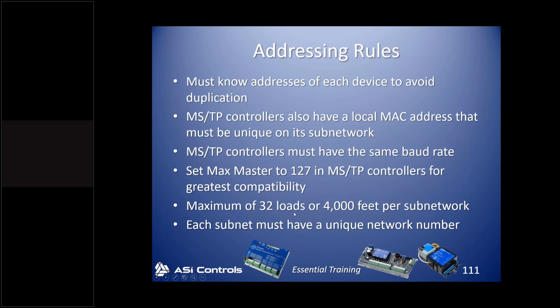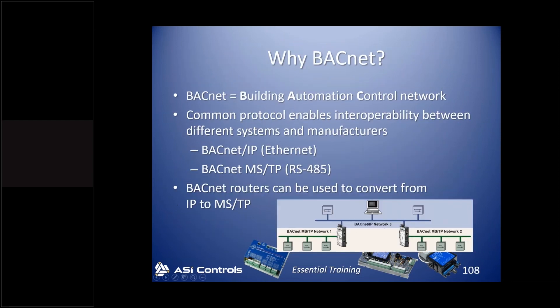Recapping from Tech Note 23: the maximum is 32 loads or 4,000 feet per sub-network. Every ASI controller is a full load controller. If integrating with other BACnet MSTP controllers, you might see half-load or quarter-load devices, so do the math accordingly. Each sub-network needs a unique network number — whether it's an IP network or an MSTP network. So in a setup with one Ethernet network numbered 3 and two MSTP networks numbered 1 and 2, those are three distinct networks.